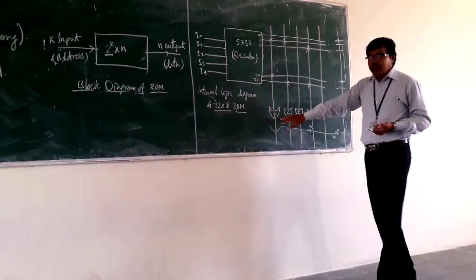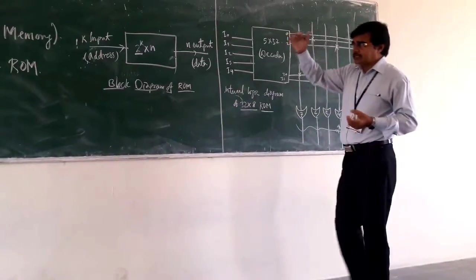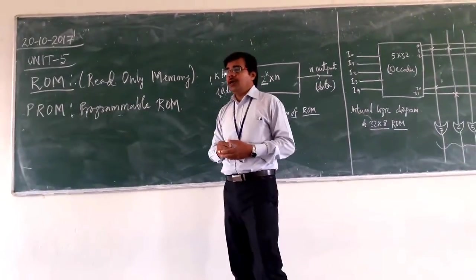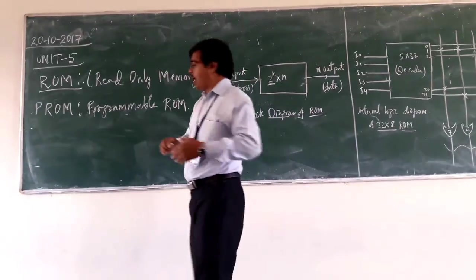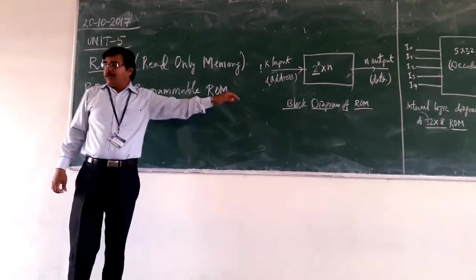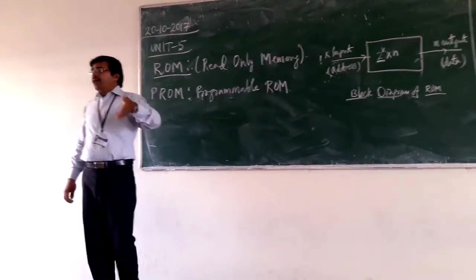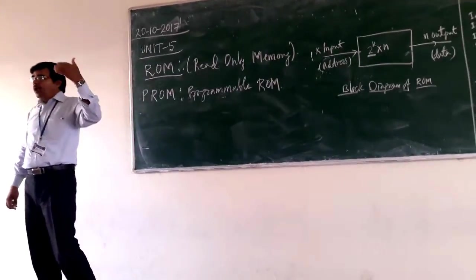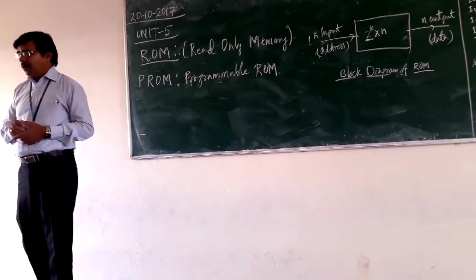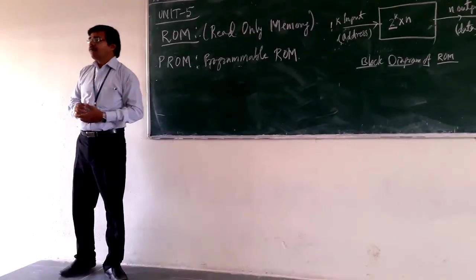As we can do the programming at your output space here, this is called your programmable read-only memory. We can even say that your programmable read-only memory consists of your AND gate and OR gate, where AND gate is fixed and OR gate is programmable. We will understand this from one example.